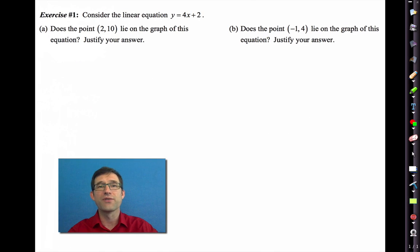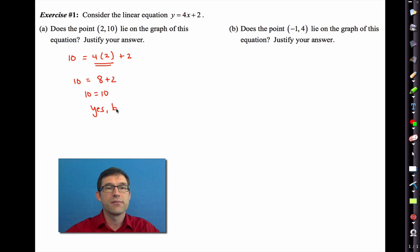Consider the linear equation y = 4x + 2. Letter A, does the point (2, 10) lie on the graph of this equation? Justify your answer. Well, it's really this simple. This point lies on the equation if it makes the equation true. So I'm going to see if it makes the equation true. I'm going to put 10 in for y, and I'm going to put 2 in for x. I remember my order of operations. This multiplication comes first, so 4 times 2 is 8, and 10 equals 10. So the answer is yes, because this is true.